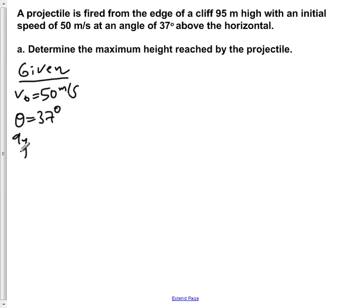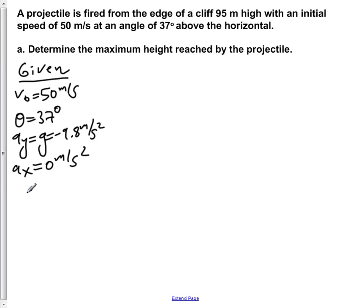We write down our given information. The initial velocity is 50 meters per second at 37 degrees above the horizontal. The vertical acceleration Ay equals negative 9.8 meters per second squared, and the horizontal acceleration Ax equals 0. The cliff is 95 meters high, so our initial vertical position y₀ is 95 meters, and our initial horizontal position x₀ is assumed to be 0 meters.